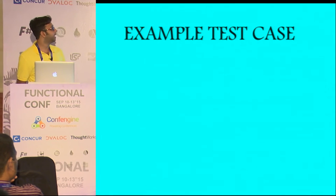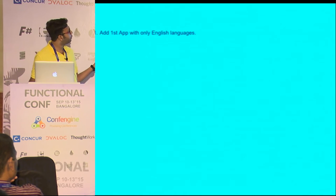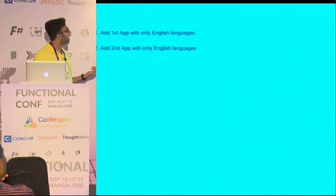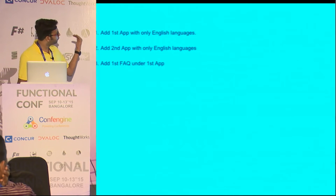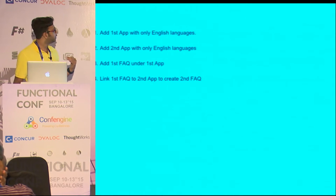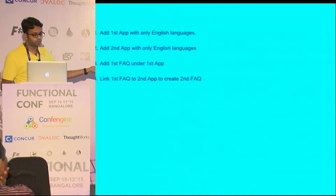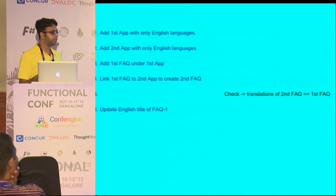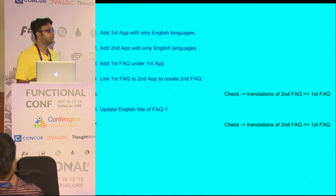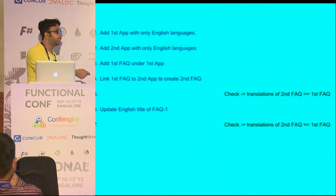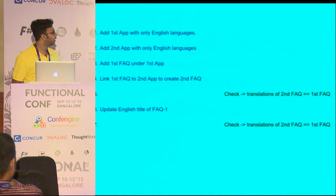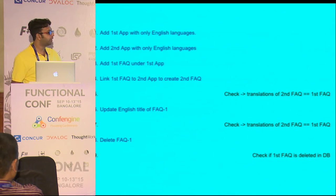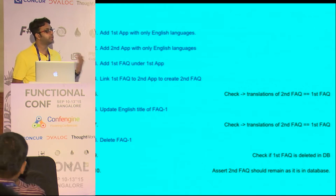Here is an example test case. I would like to add one app with only English language, then add another app, then add the first FAQ under the first app, then link FAQ 1 to app 2 to create FAQ 2. Then I'd like to test whether the translations of both FAQs match, then update the English title, then check whether the content is being synced and updated to the second FAQ as well. Then I'd delete the FAQ, check whether it's actually deleted in the database, and then make sure the second FAQ is still remaining intact.